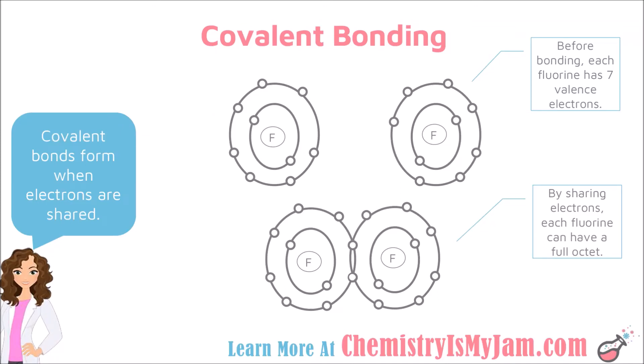This is Rebecca from ChemistryIsMyJam.com. In this video, we are going to look at covalent bonding. Recall that atoms bond in order to gain full outer energy levels. The octet rule tells us that most atoms are satisfied with 8 electrons in their outermost energy level. Atoms can either transfer or share electrons in order to achieve full outer energy levels. In the case of covalent bonding, atoms will share electrons.